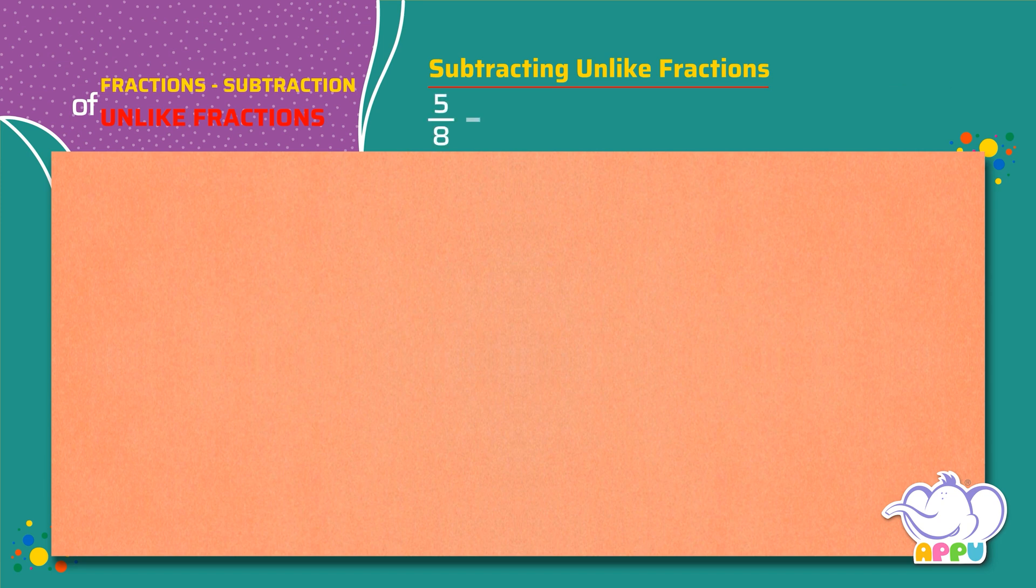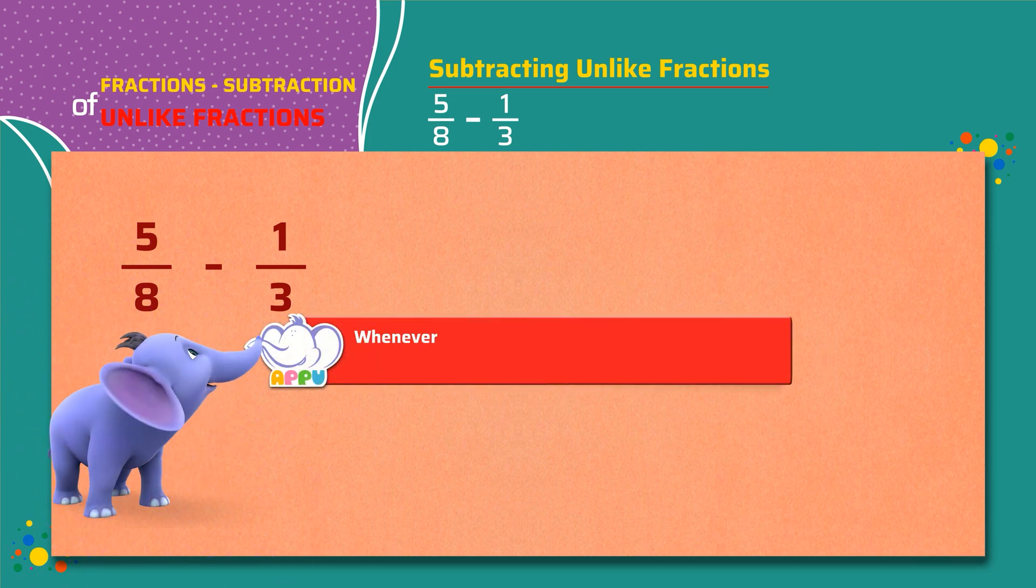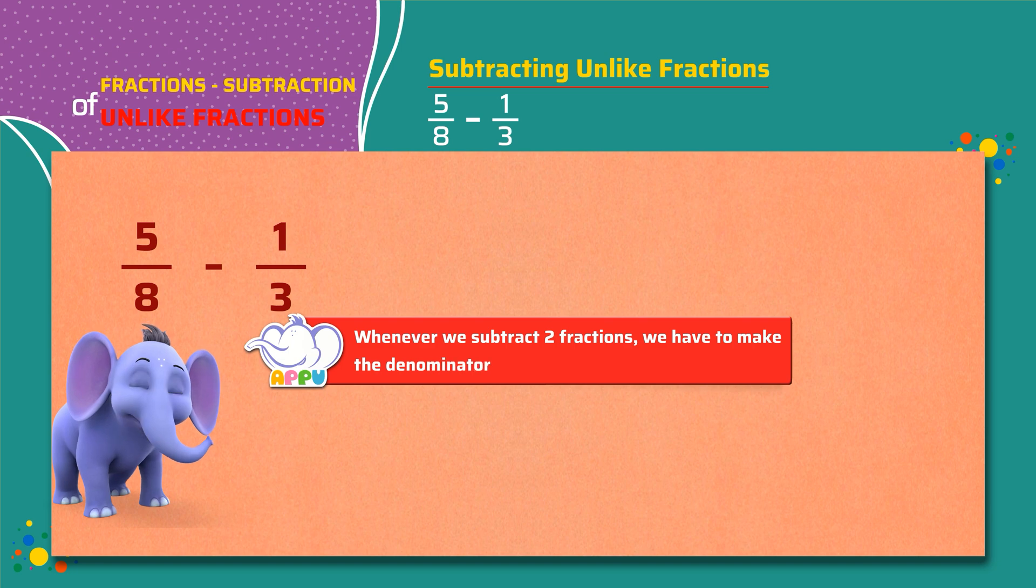5 by 8 minus 1 by 3. Whenever we subtract two fractions, we have to make the denominators same.